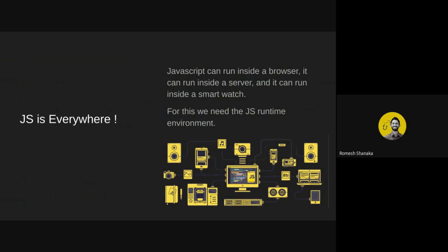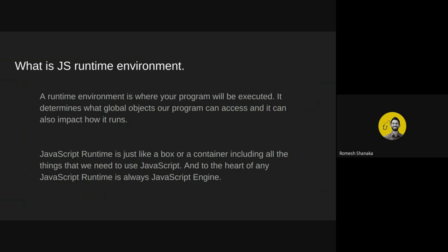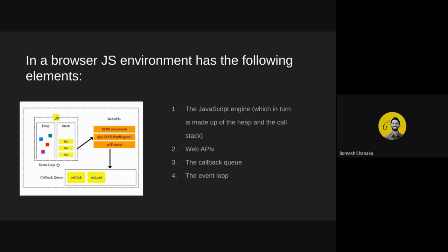In today's world we can run JavaScript almost anywhere — on our mobile phones, laptops, and even smart watches. To run JavaScript on those platforms we need a JavaScript runtime environment. A runtime environment is where our program will be executed; it determines what global objects our program can access and can impact how it runs. The JavaScript runtime is like a container including all the things we need to use JavaScript.